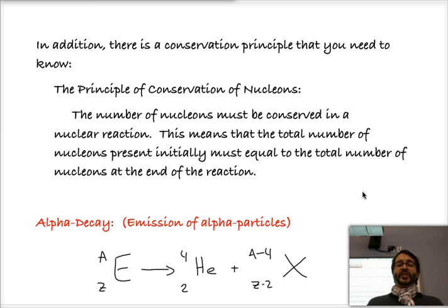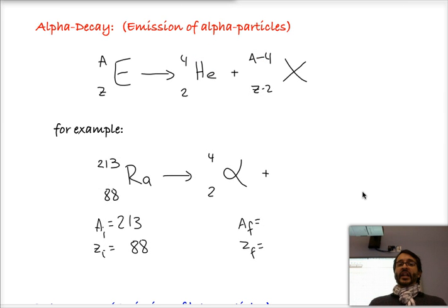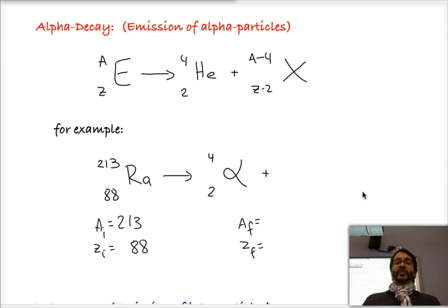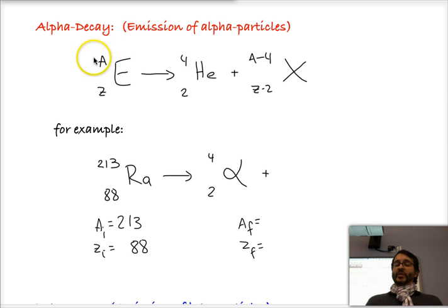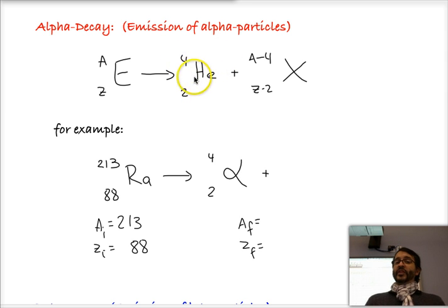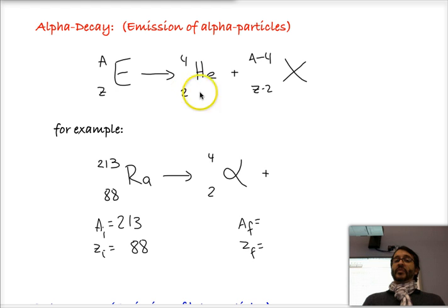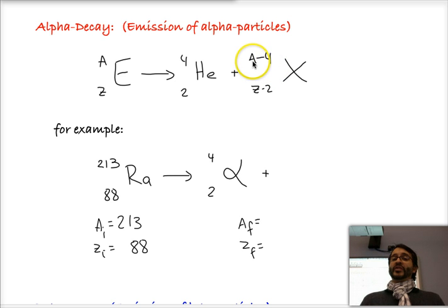Let's go ahead and go directly into the first type of decay — alpha decay. Alpha decay is when an alpha particle is emitted by the nucleus of an atom. In this particular case, I have symbolized the atom by the capital letter E for element. It has a mass number A and an atomic number Z. When we emit an alpha particle — written here as a nucleus of helium — we know that there are 4 mass numbers and 2 protons being emitted. So our resulting element X is going to be the original mass number minus 4 and the original atomic number minus 2.